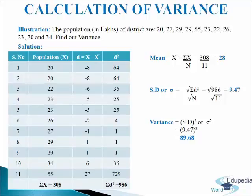In the last column we will write d square. So minus 8 squared gives 64; again minus 8 squared gives 64; minus 6 squared gives 36; minus 5 squared gives 25; again minus 5 squared gives 25; minus 2 squared gives 4; minus 1 squared gives 1; again minus 1 squared gives 1.